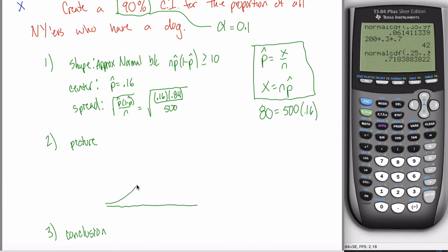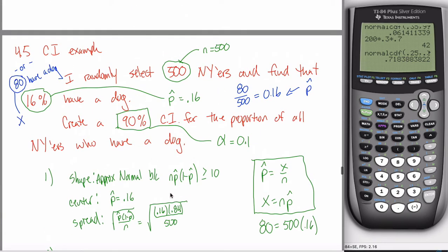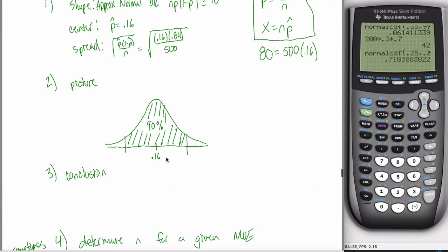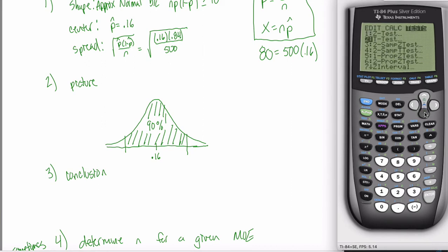Step 2 — Picture: Draw something approximately normal, because your shape is approximately normal. Put the center at 0.16 — the point estimate. Then find the two bounds that separate the middle 90% from the outside 10%. Why 90%? Because the problem asks for a 90% confidence interval. You could find these with the inverse norm function on your calculator, but your calculator has a better built-in function: don't use Z-Interval. Use 1-PropZInt — one prop Z interval, where 'prop' stands for proportions.